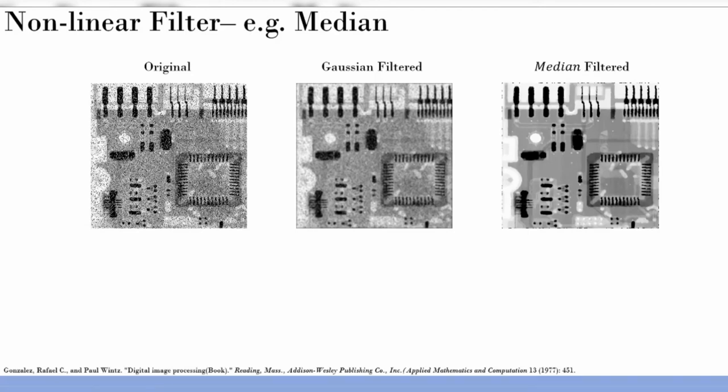Welcome back. In the previous lecture, we discussed smoothing and averaging filters and their significance. We derived that the averaging operation gives you the minimum square error when replacing a particular pixel in accordance with its neighbors. That's a very important concept.